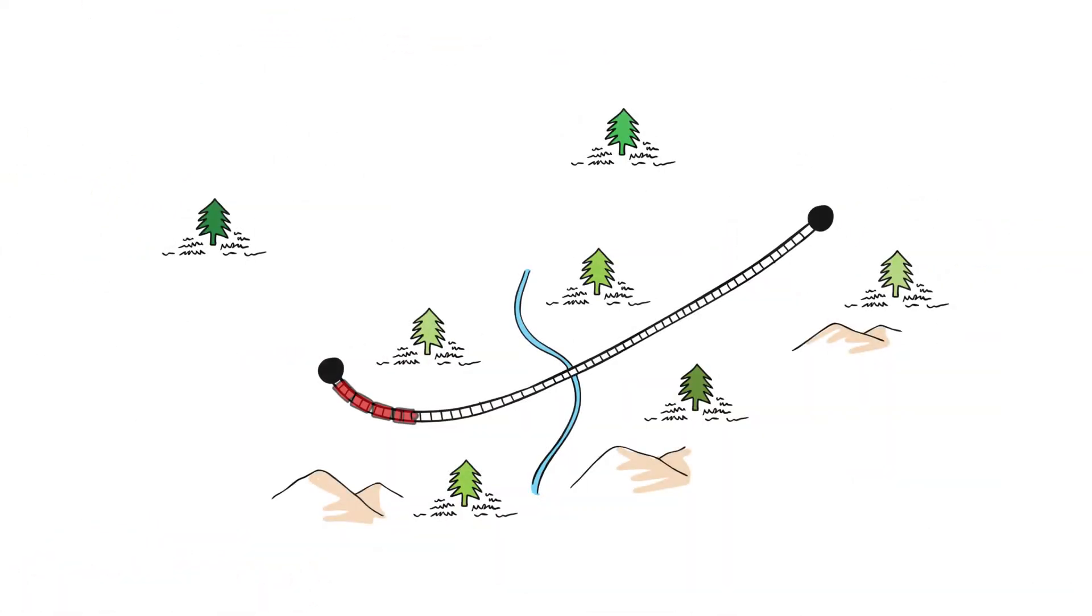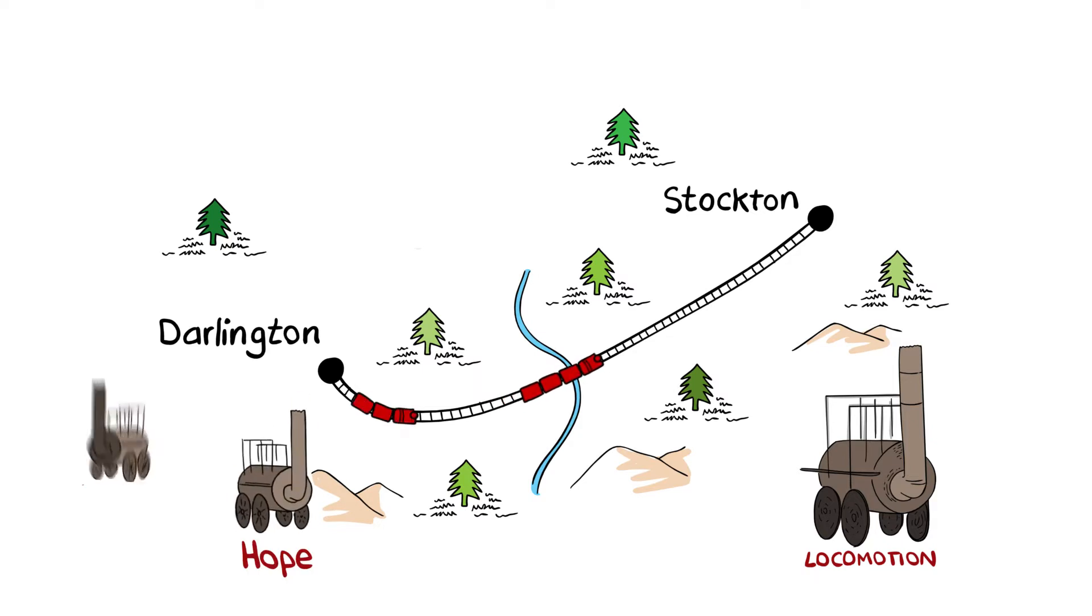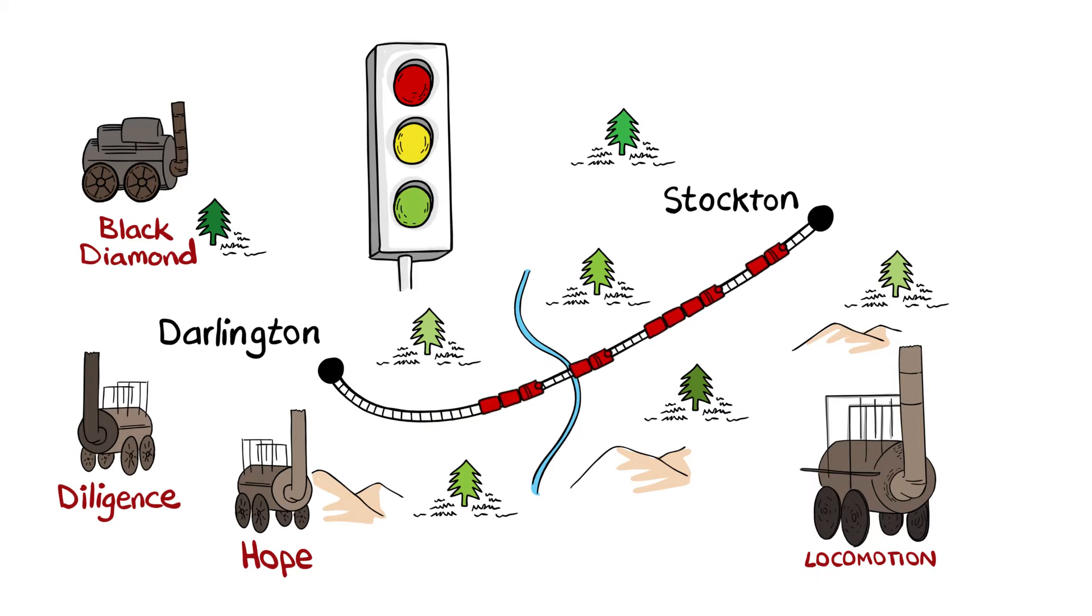In the early days, the Stockton and Darlington Railway did not have a signaling scheme to protect the locomotion traveling back and forth between the two towns. A single train on a track did not warrant such an investment. But as locomotives Hope, Diligence and Black Diamond entered service, a method to safely control and regulate train movements became necessary.